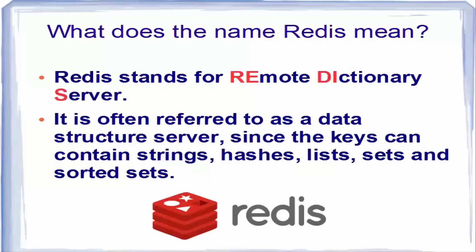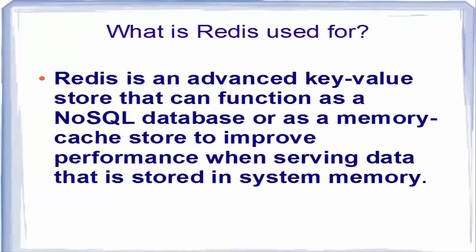The name Redis stands for Remote Directory Server. It is often referred to as a data structure server since the keys can contain strings, hashes, lists, sets, and sorted sets. Because keys can contain these different data structures, it's often referred to as a data structure server.